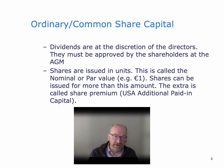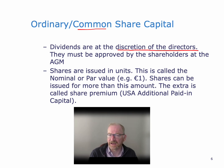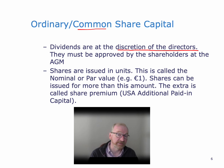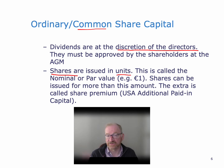Regarding ordinary — or in the USA, common — share capital: dividends, which are the payout to equity holders in the company, are at the discretion of the directors. There isn't an interest rate or something like that that has to be paid out to the ordinary shareholders every year. The directors decide what is appropriate to pay out based on how well the company is doing and what its resources are like. There are some restrictions in company law as to how much can be paid out. Shares are issued in units, and this is called the nominal or par value of the shares.